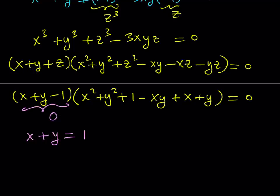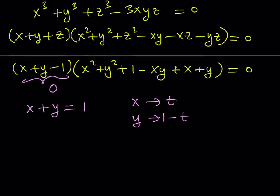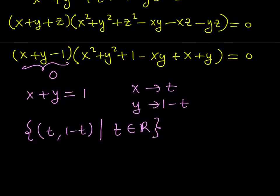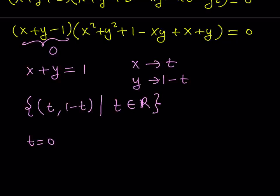The first solutions come from the equation x plus y equals 1. We don't have any other condition on x and y, so any two numbers that add up to 1 will be a solution. We can parameterize the solutions by replacing x with t — then y becomes 1 minus t. So the solution set is the set of ordered pairs (t, 1 minus t) such that t is a real number. For example, if t equals 0, then you get (0, 1) as a solution, and you can quickly check that in the original equation.